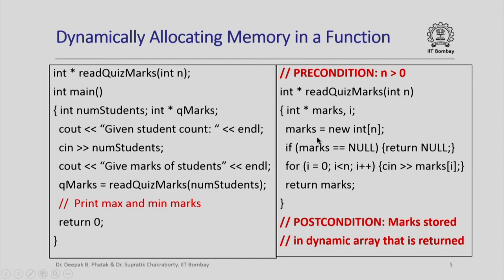Inside `read_quiz_marks` I dynamically allocate an integer array of size n, and if the dynamic allocation failed I return null. Note that I could have put this as part of my postcondition — in good programming practice you should indicate this. If the dynamic allocation was successful I iterate through a for loop, read in all the marks, store them in the marks array, and finally return marks. `marks` is going to contain the address of the first element in this dynamically allocated array, and that address is returned to the main function.